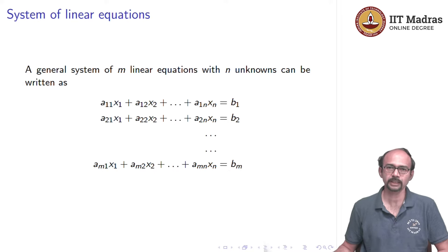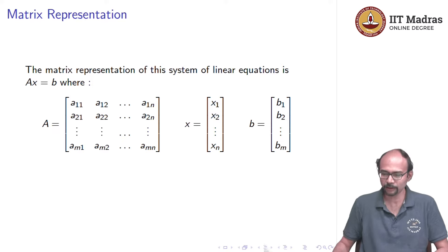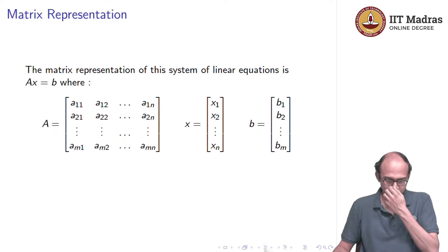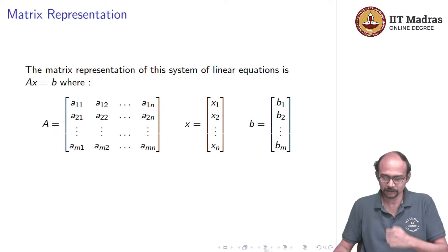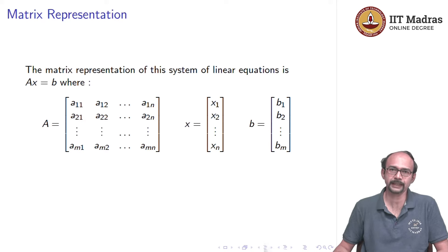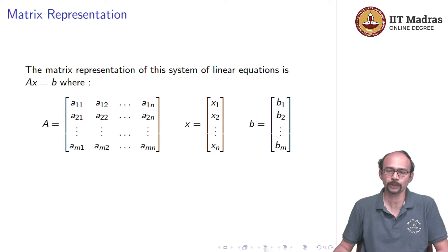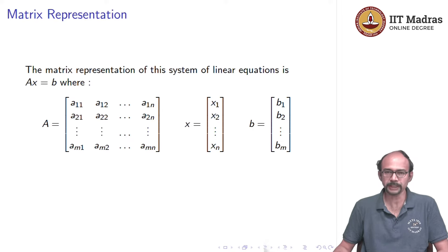We have seen earlier that we can write this in a matrix form. We consider the m×n matrix A, which is the matrix of coefficients, x is the vector of unknowns x1, x2, ..., xn, and b is the column vector of constants b1, b2, ..., bm.